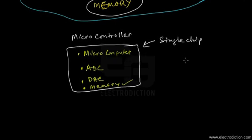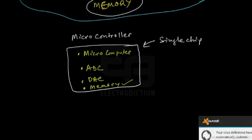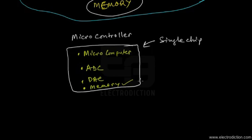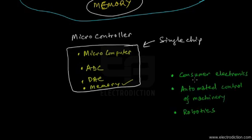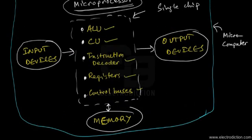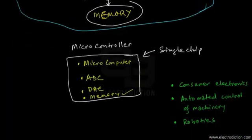Microcontrollers have become a very important portion of the entire processor industry. They are applied hugely in the areas of consumer electronics, automated masonry control, and are very popular in the field of robotics. This summarizes the key differences between a microcontroller, a microcomputer system, and a microprocessor.